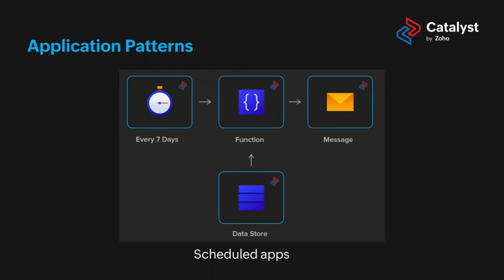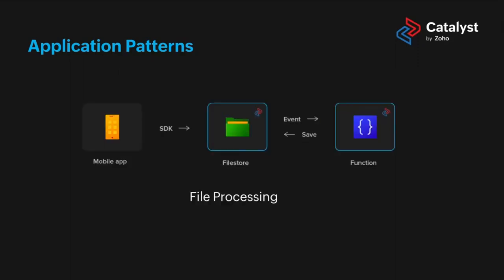This is an example of a backend microservice — an event-driven application performing data processing. It's similar to file processing. We took the data, processed it via the sentiment analysis microservice, and routed it to the respective destinations. Based on the result, we'd either send it out as a ticket for the support team to investigate, or, if it was a positive comment, send it to the marketing team to use as a testimonial.